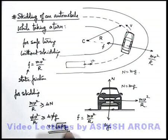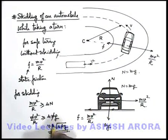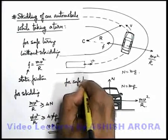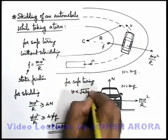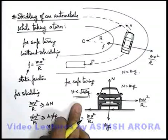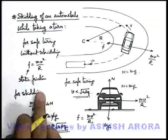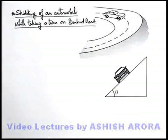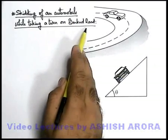This is the maximum limit up to which a car can take a turn without skidding. If the car speed is more than or equal to √(μrg), the car will skid. For safe turning, the speed of the car must be less than √(μrg). Now we will discuss various cases of skidding of an automobile while taking a turn on a banked road.